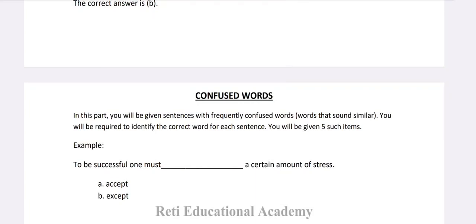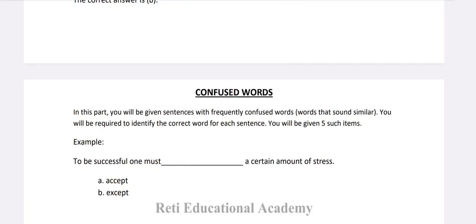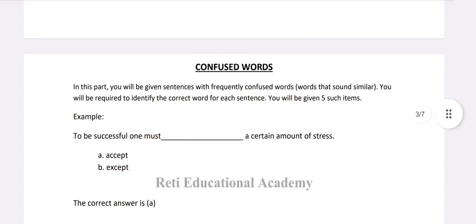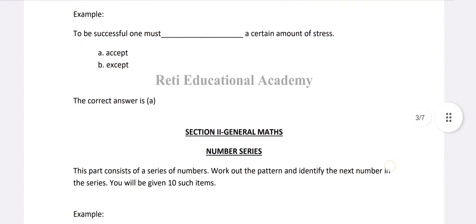Confused Words: You will be given sentences with frequently confused words — words that sound similar. You will be required to identify the correct word for each sentence. You will be given 5 such items. Example: 'To be successful one must blank a certain amount of stress.' A. Accept, B. Except. The right option is A, Accept — spelled A-C-C-E-P-T — accept a certain amount of stress.